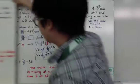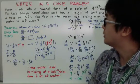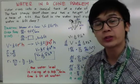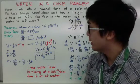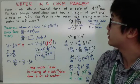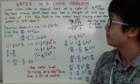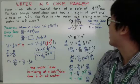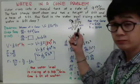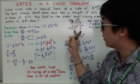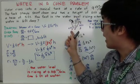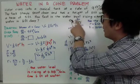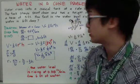The next problem is the water in a cone problem. We have a new geometric shape: a cone. The problem states that water runs into a conical tank at a rate of 9 cubic feet per minute. The tank stands point-down and has a height of 10 feet and a base radius of 5 feet. How fast is the water level rising when the water is 6 feet deep? Here's my cone pointing downward. The conical tank has a height of 10 feet with a radius of 5 feet at the base.